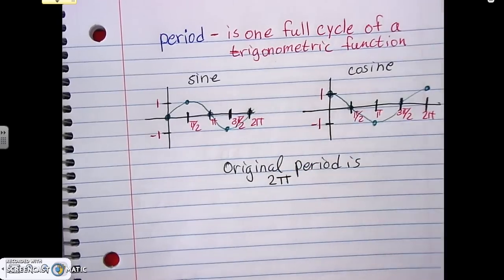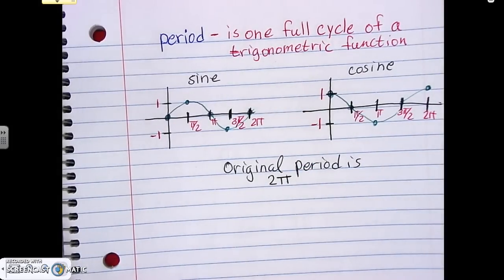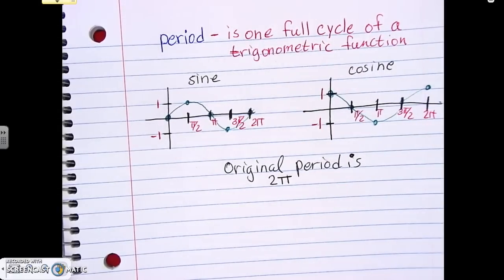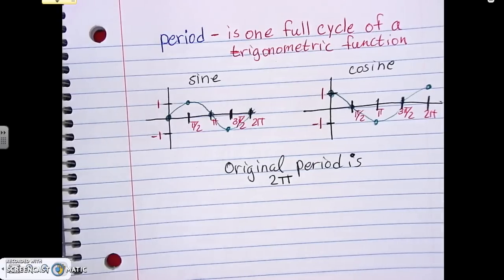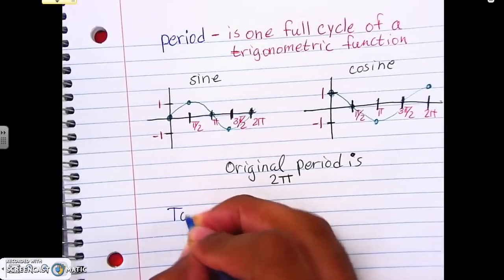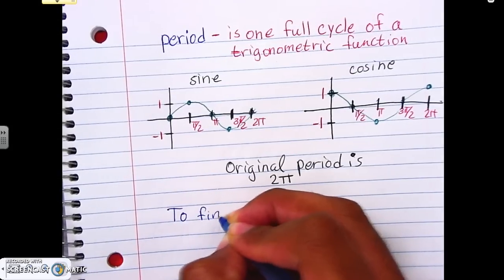So the original period for these functions is 2π — that's the original. What's going to happen is it's not always going to be 2π; it's going to change depending on the actual function. We're going to figure out what happens with the other parts. To find our period for a new, transformed function, we must use a formula.